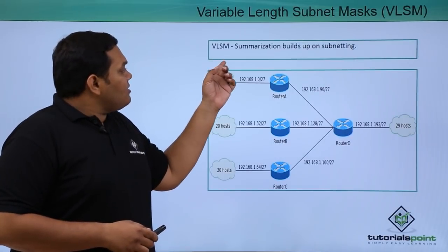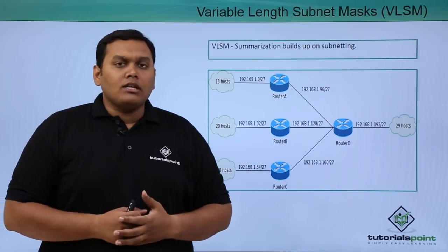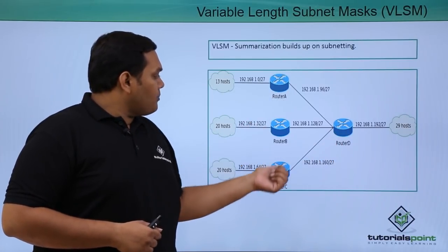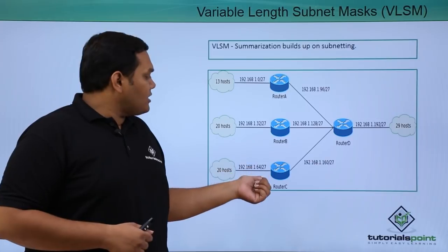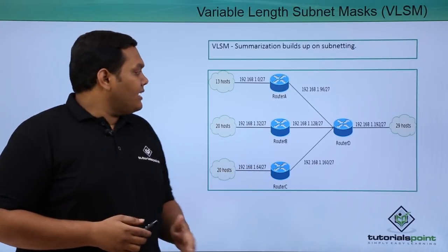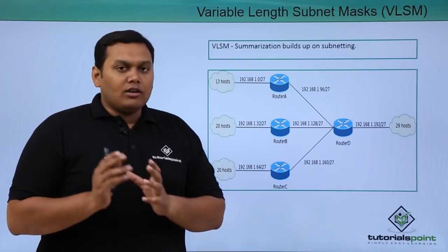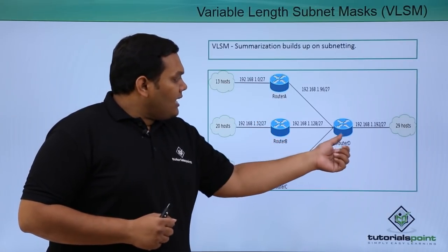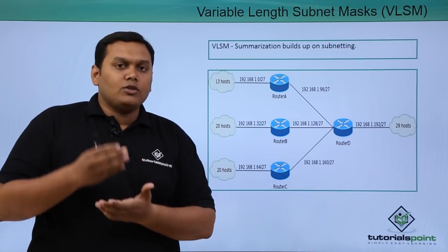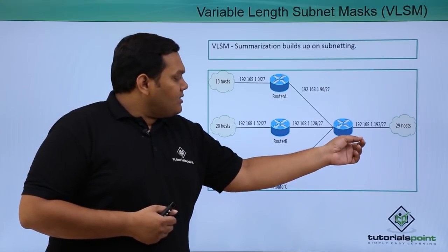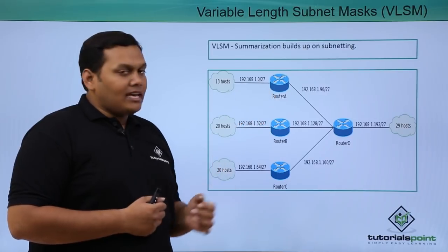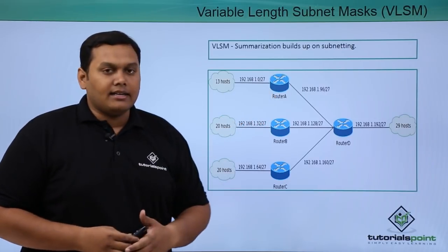VLSM is summarization built upon subnetting. One network is further divided into sub-subnet masks, provided with slash notations, and depends on the hosts available on it. As you can see here, routers A, B, C, D are configured, and router D has a main address 192.168.1.192/27, which is further divided into three networks given with slash notations based on the number of hosts connected.